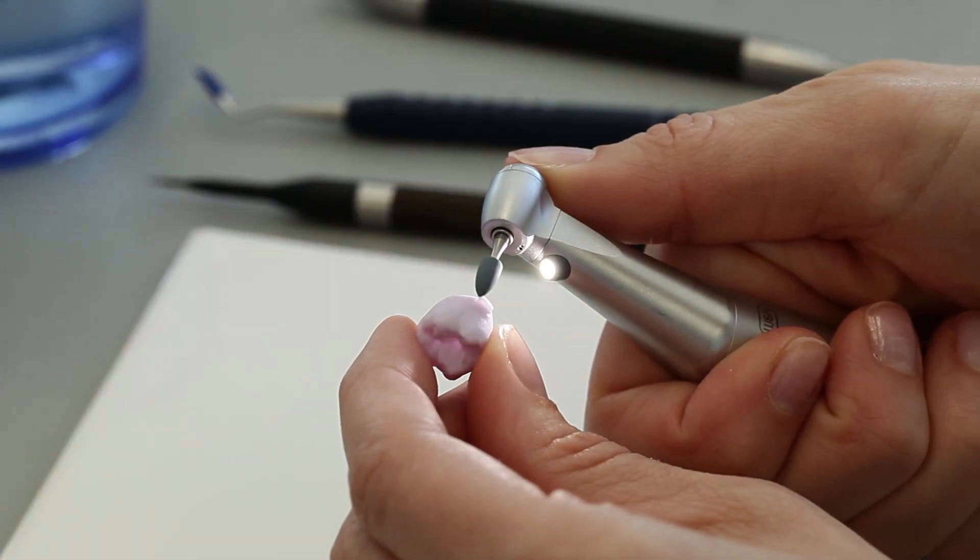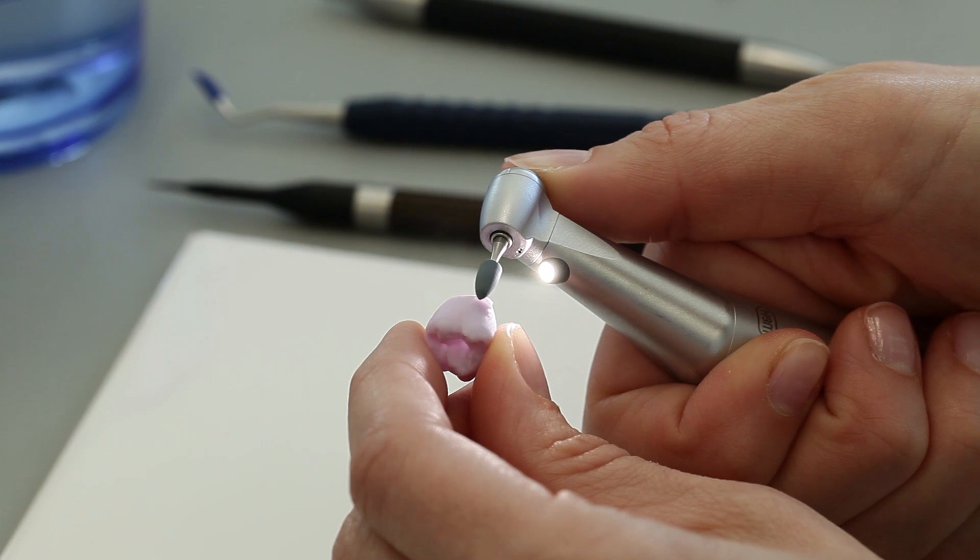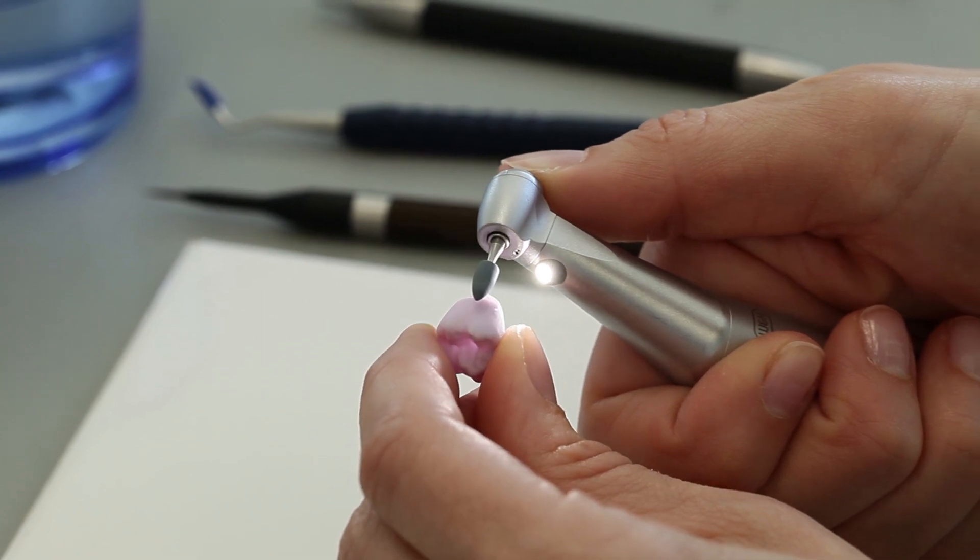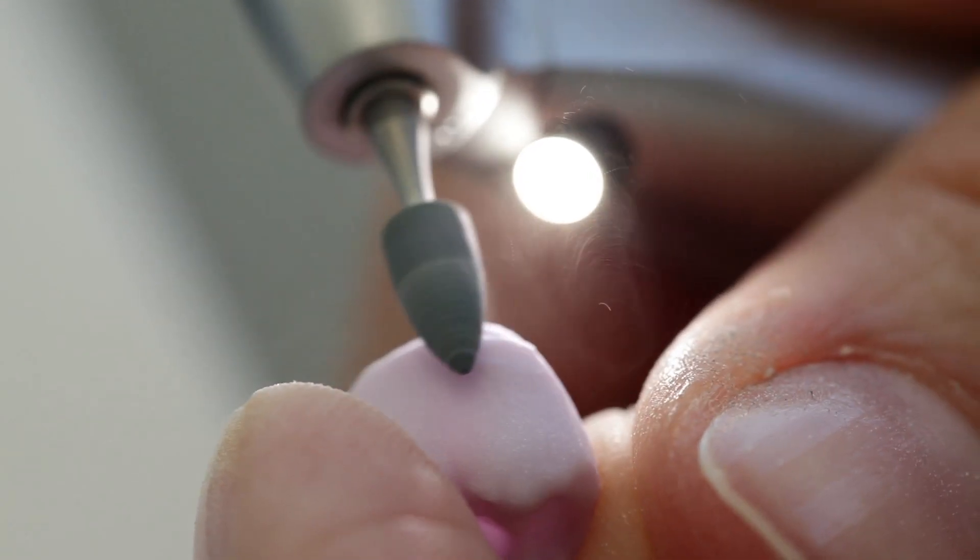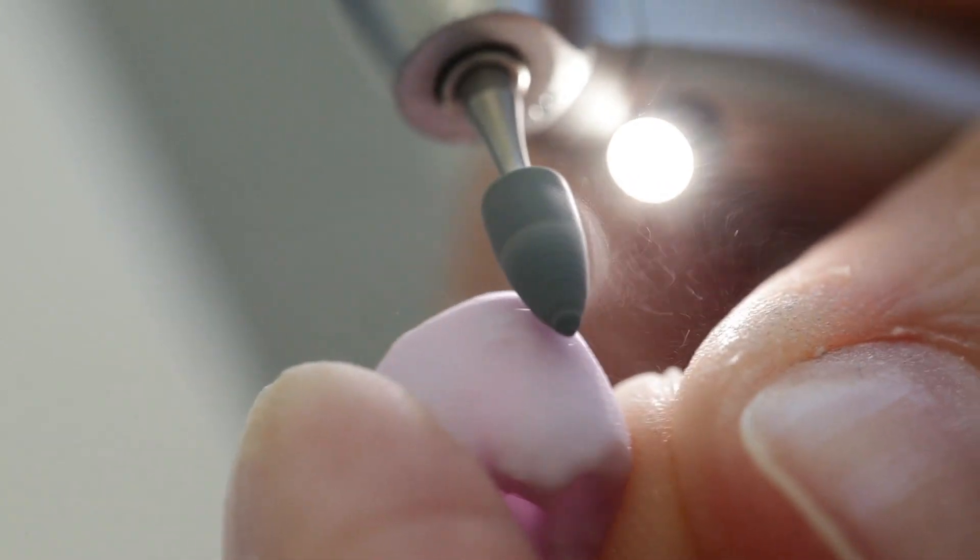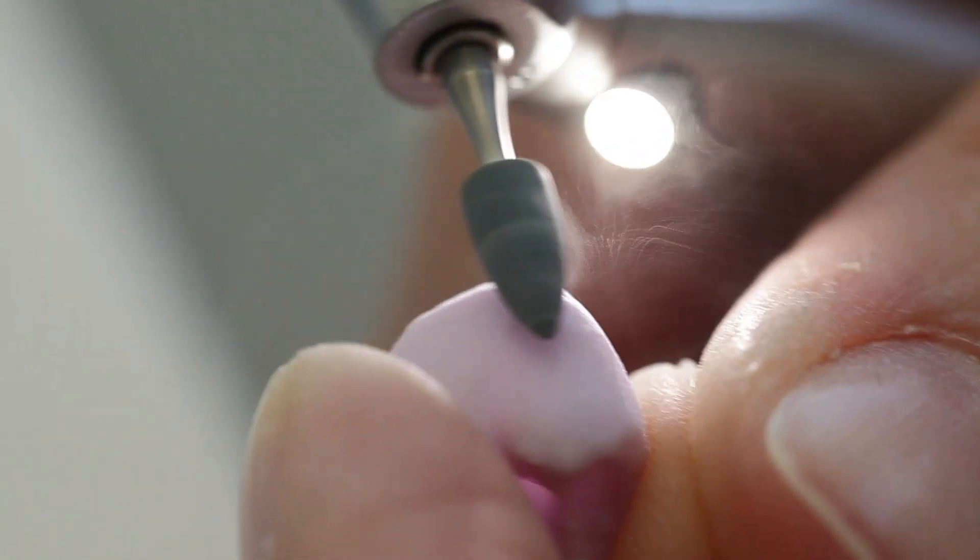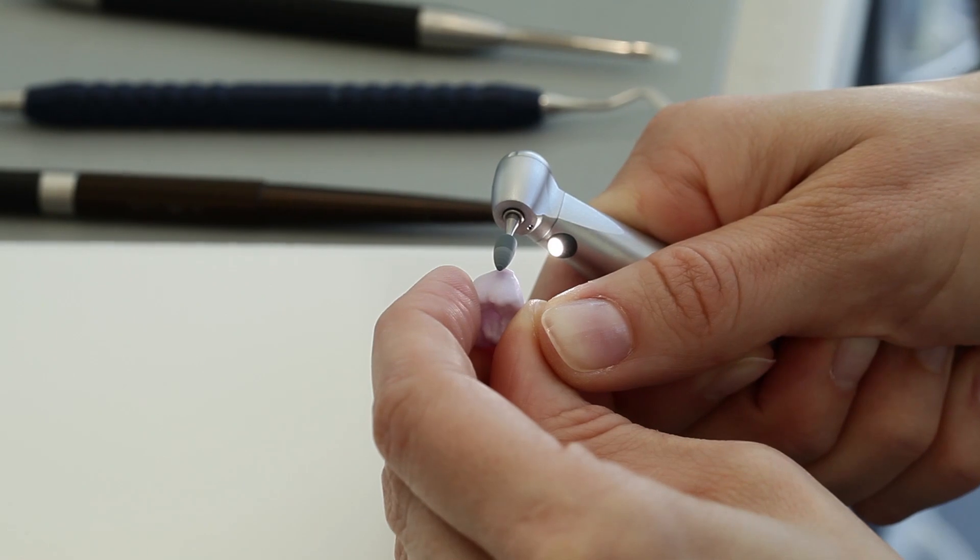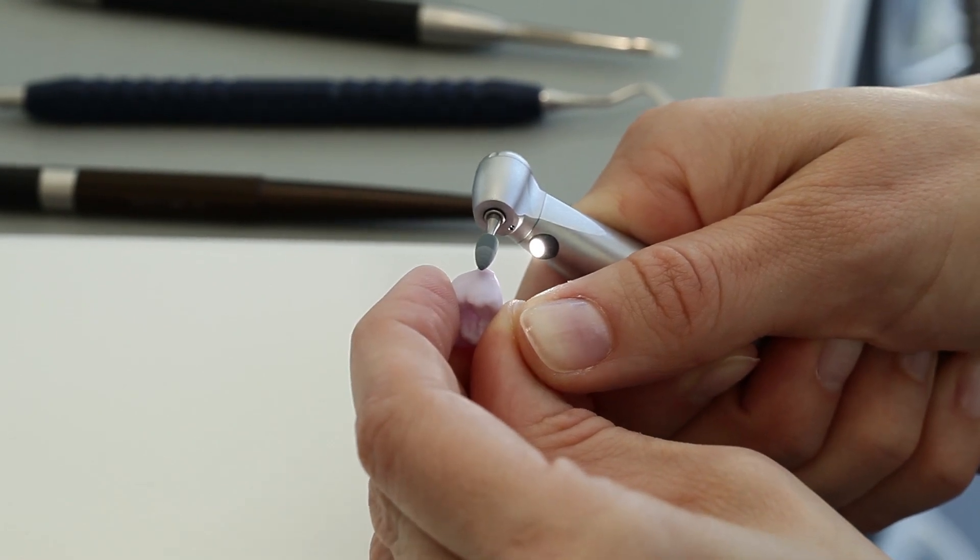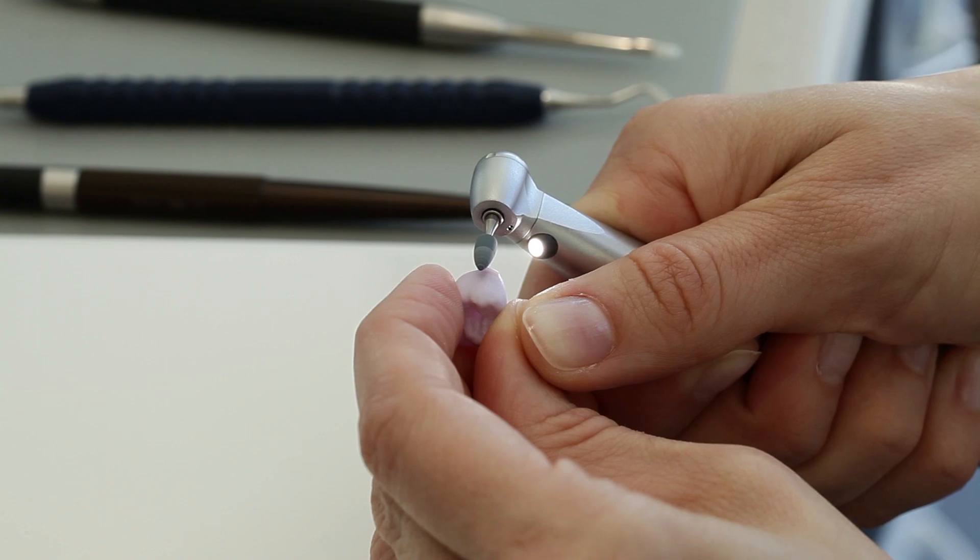Hold the milled IPS Emax CAD restoration and grind down the attachment point. Consult the flowchart entitled Recommended Grinding Tools for Glass Ceramics to select the most appropriate grinding instrument. Use low RPMs and light pressure to grind the attachment point.